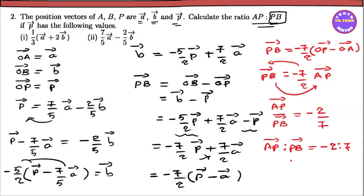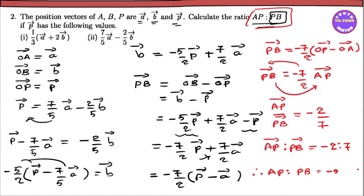Now if you have a vector, you can see the vector. Therefore AB is to BB equal to negative 2 is to 7.